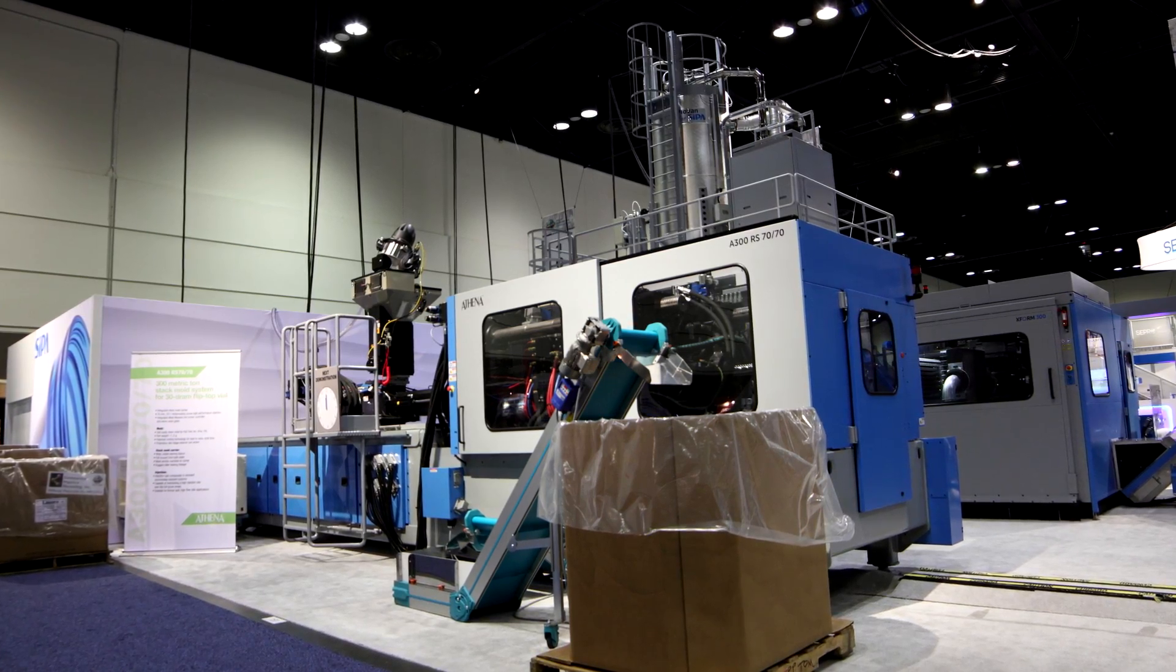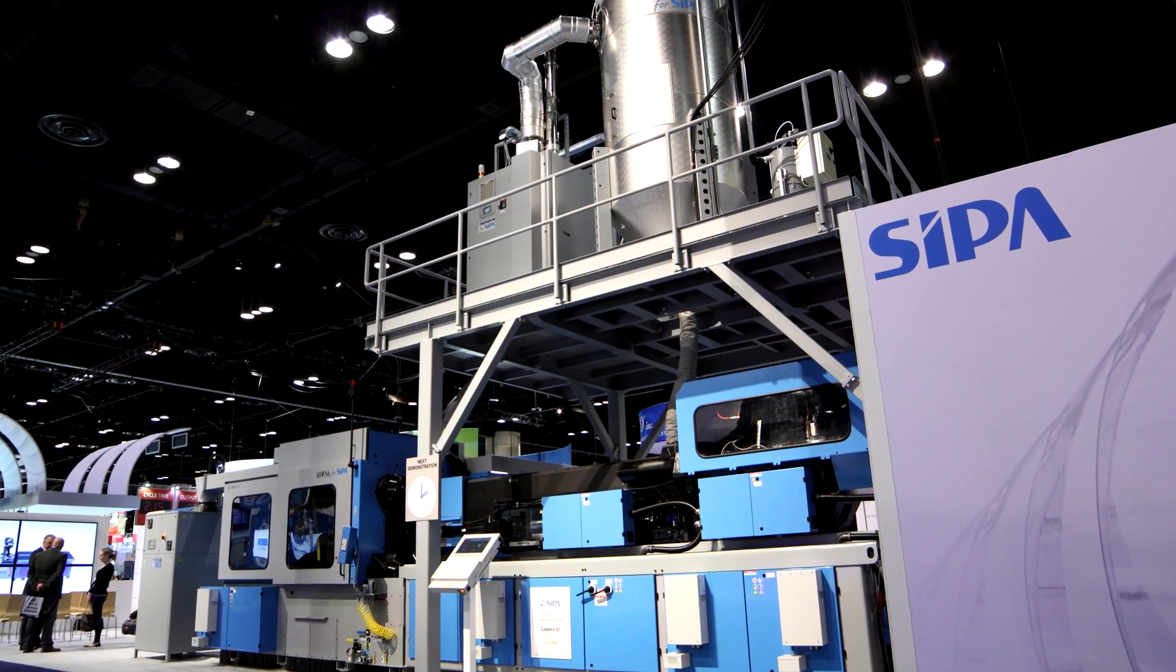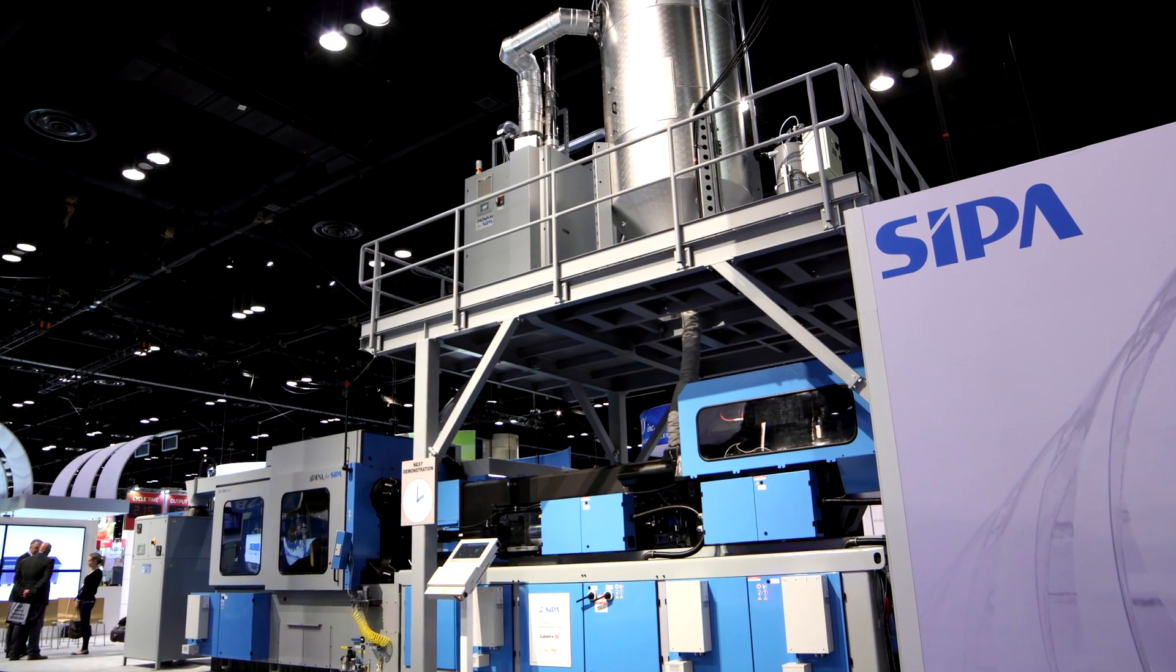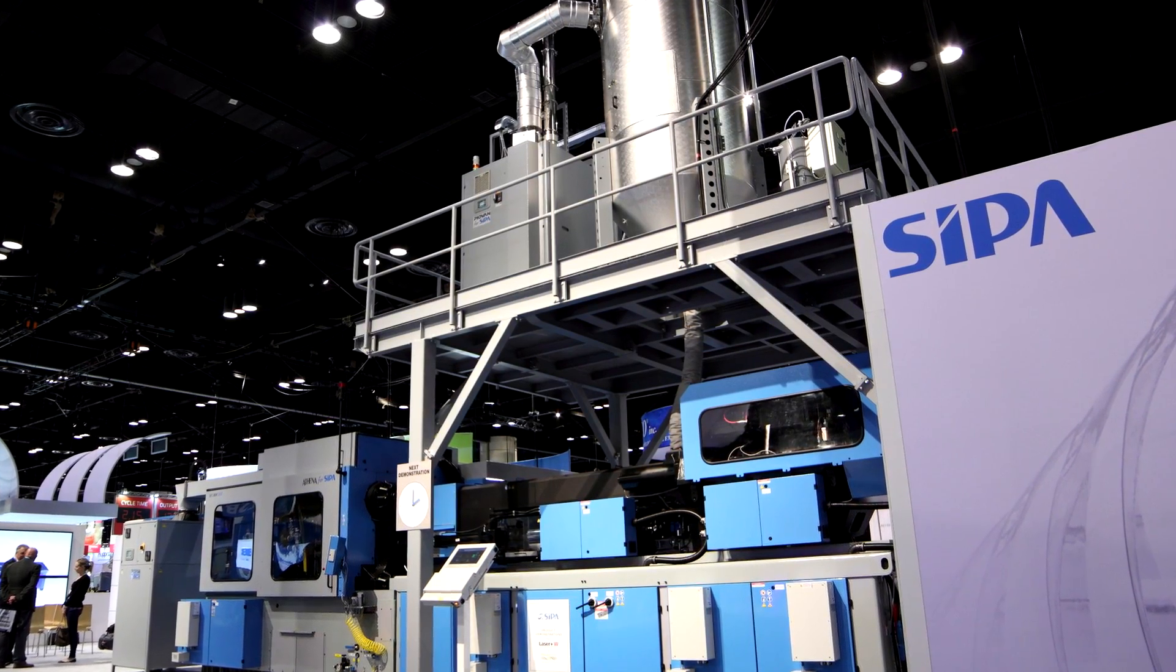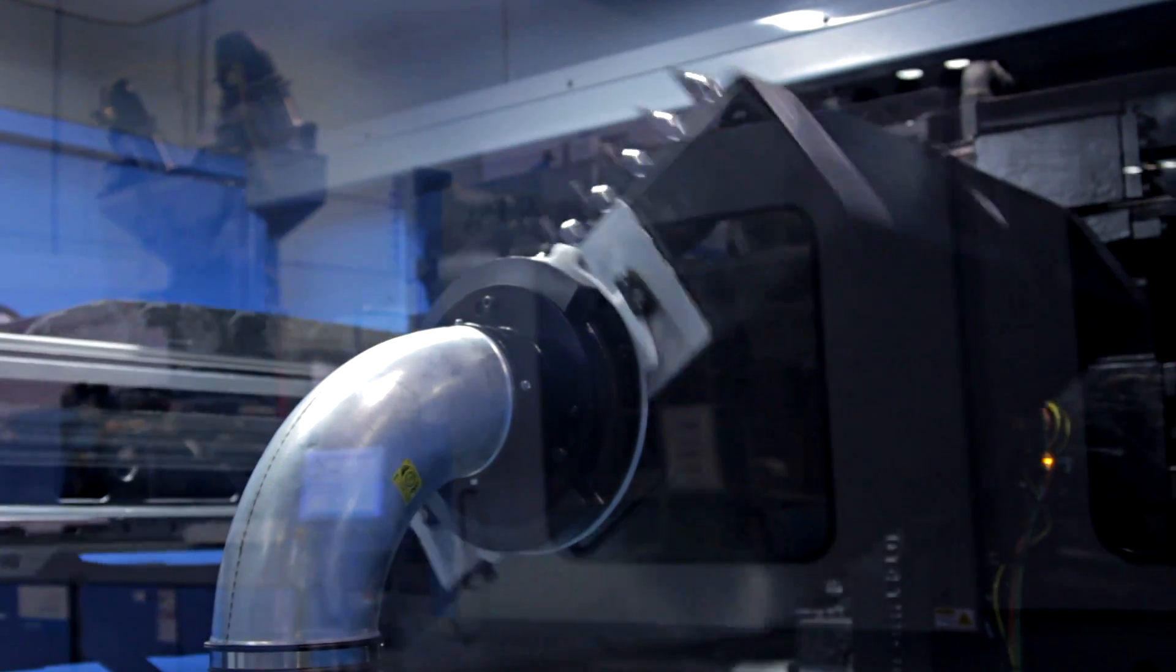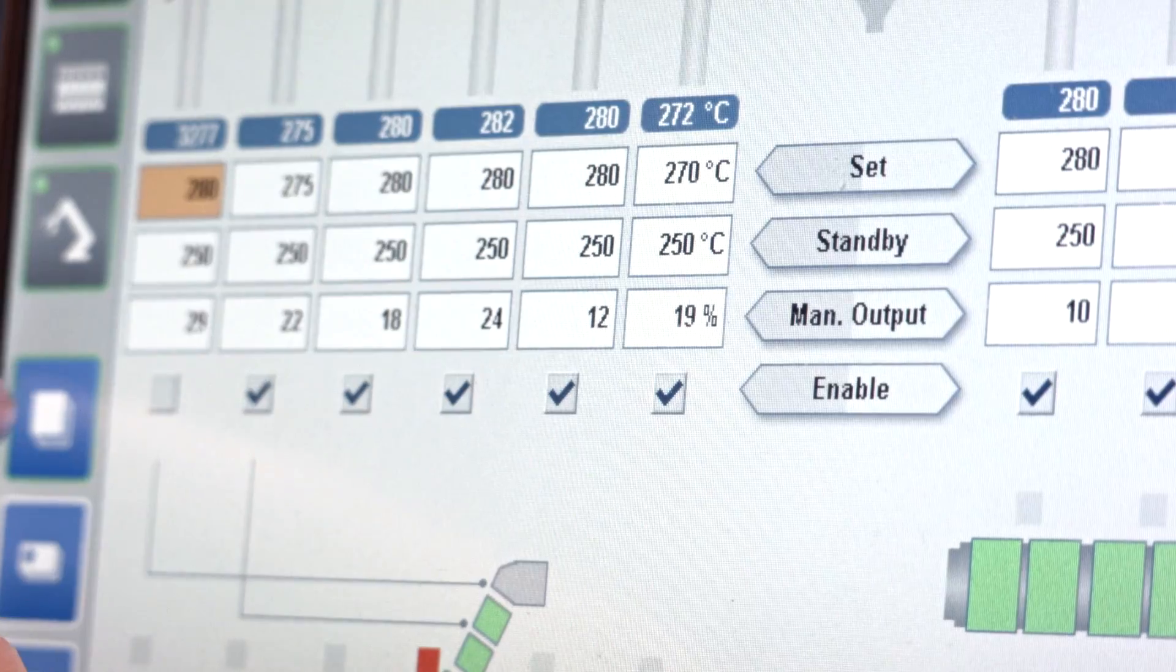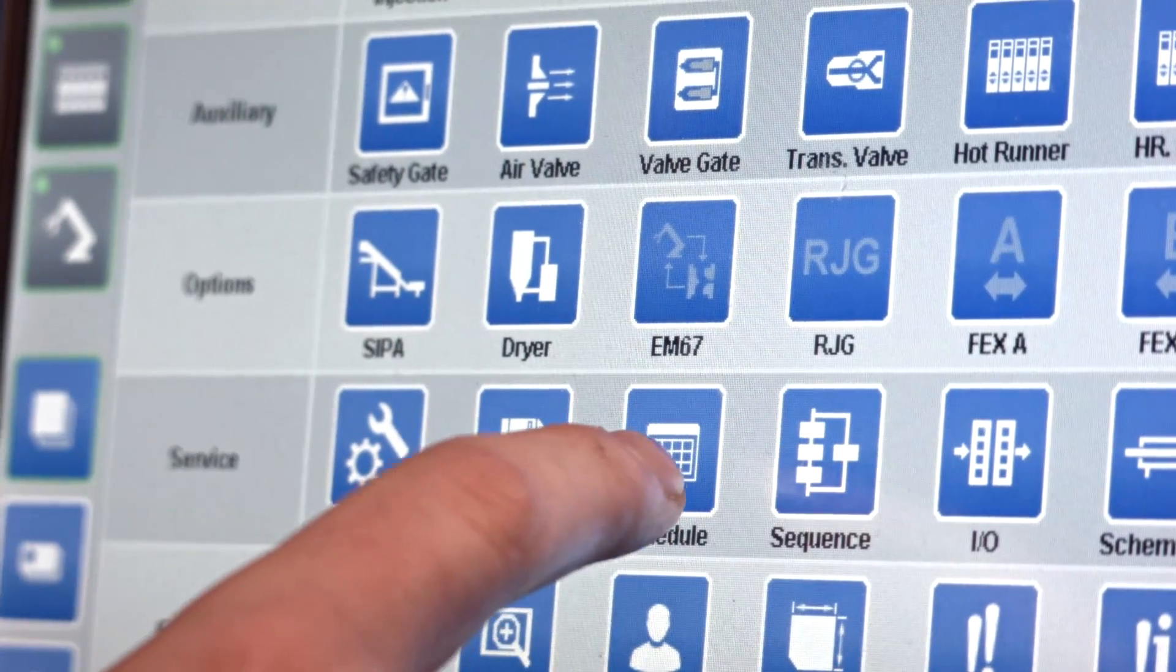We have four systems at NPE. The first is the X-Form Pre-Form system, 72 cavity. It's providing world-class cycle time, floor space, energy efficiency and the cleanliness of the overall integration.